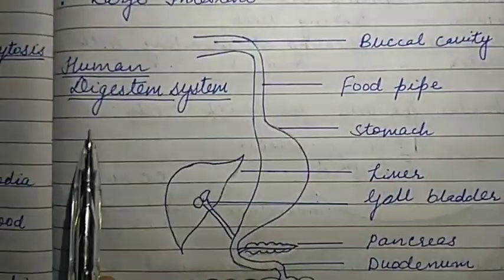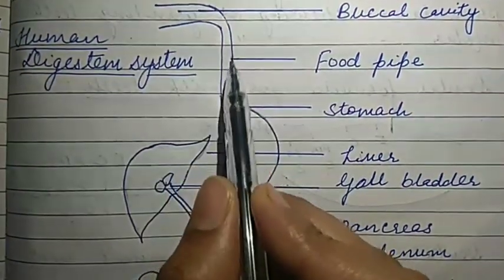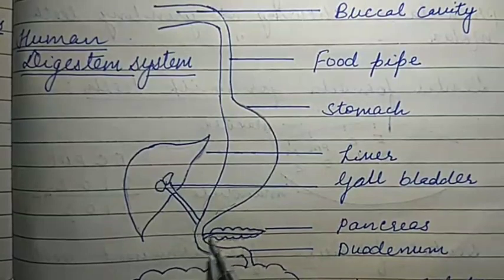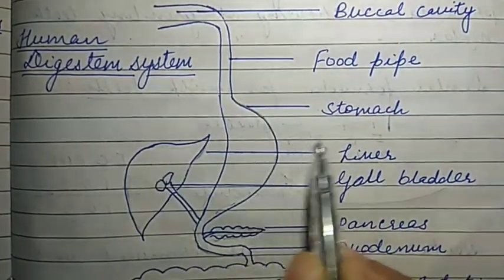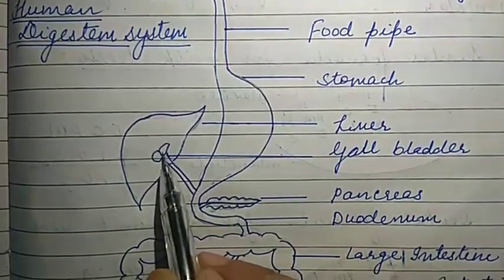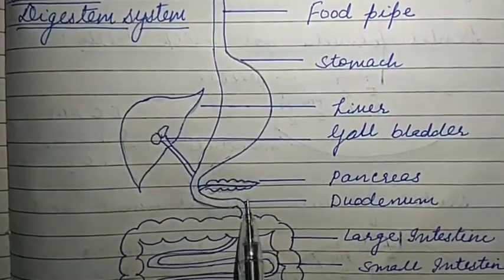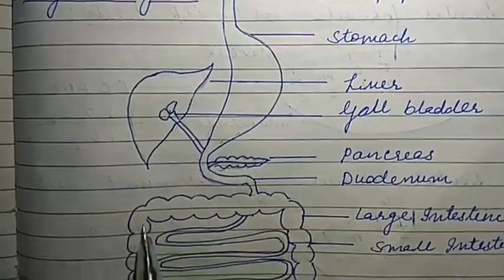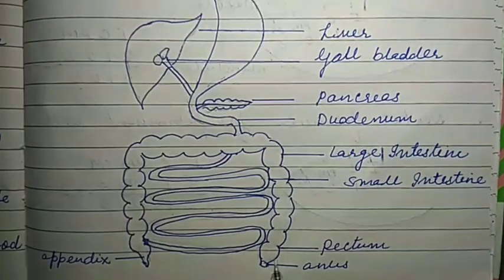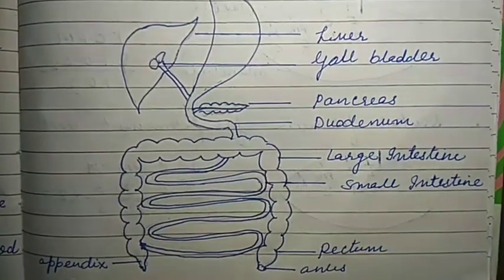Here I have drawn the diagram of the human digestive system. This part is the buccal cavity. The second part is the food pipe — a tube-like structure 25 centimeters long. This J-shaped or bag-shaped structure is the stomach, where gastric glands are present. This cap-like structure is the liver, and inside the liver the gallbladder is present. Just below the stomach is a leaf-like structure — the pancreas. This U-shaped structure is the duodenum, part of the small intestine. The coiled structure is the small intestine, and the large intestine follows. The swelling part is the rectum and the small opening is the anus. On the side is the appendix.